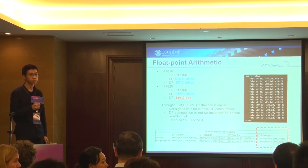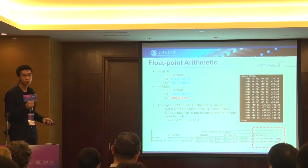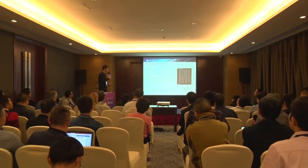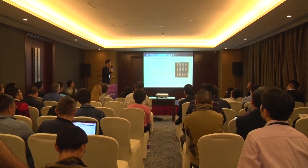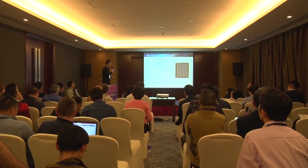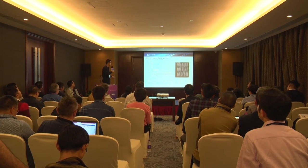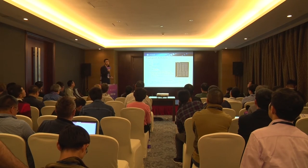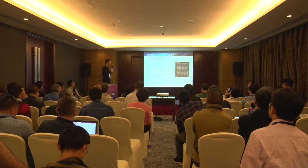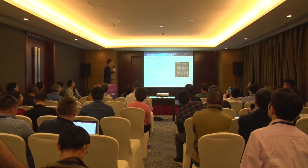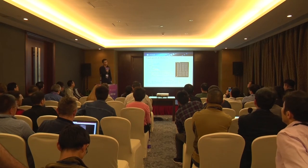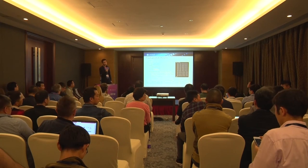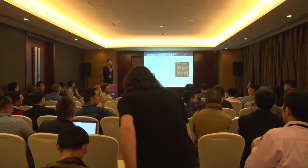A question was raised about the double precision issue. When using double precision operations, the throughput decreases to half of single precision, which causes the performance decrease on Huawei's chip compared to the Intel Xeon Gold 6148.